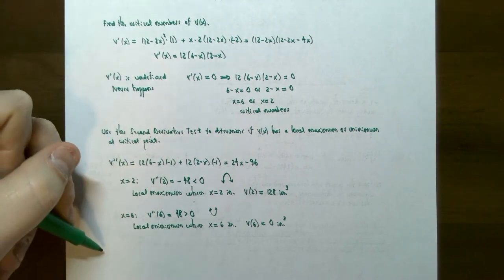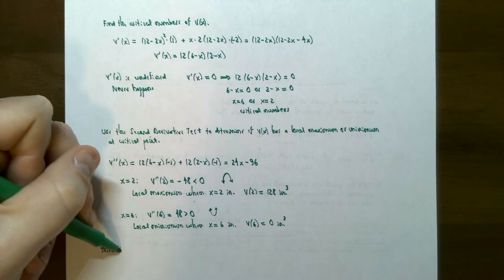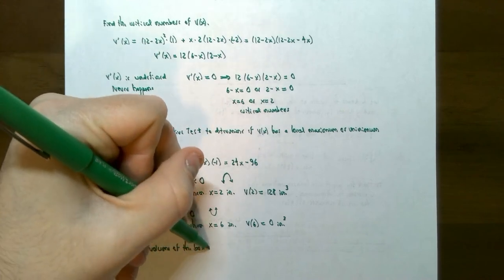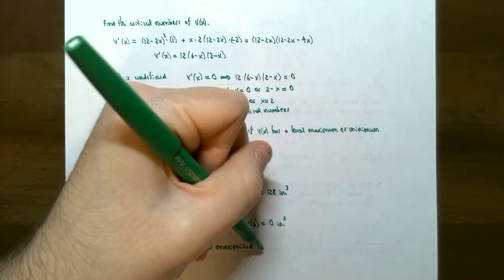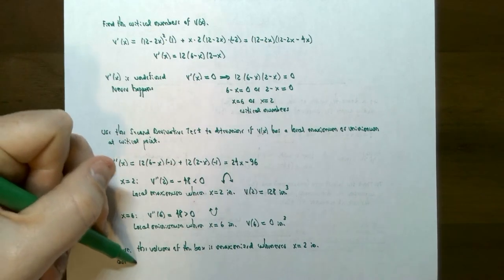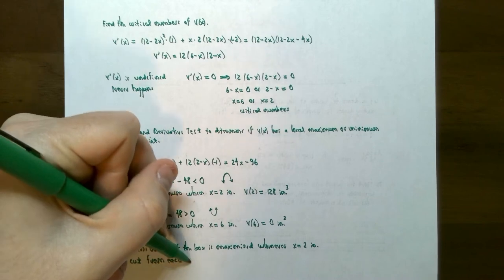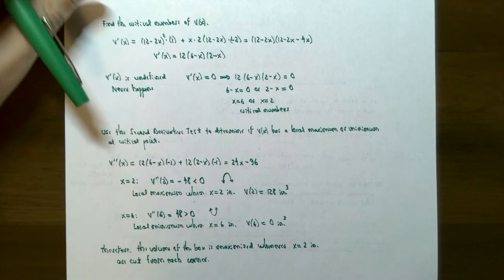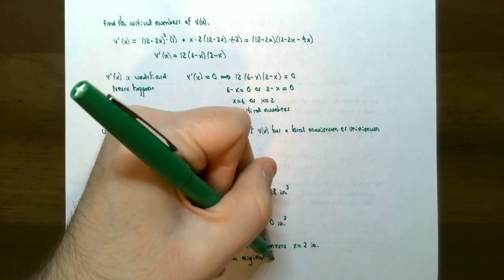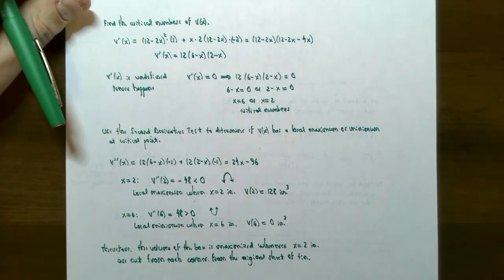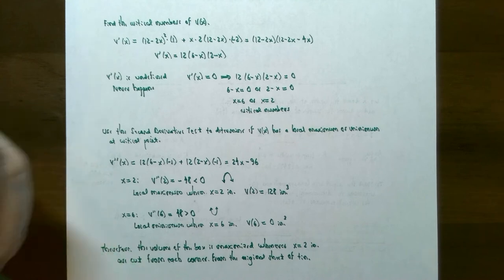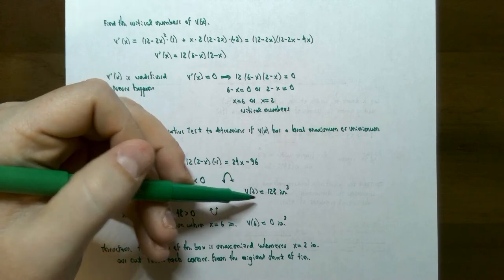So how does this answer the problem? The volume of the box is maximized whenever two inches are cut from each corner of the original sheet of tin. That's what was being asked — how much to cut from each corner so the box holds as much as possible. We also found the maximum volume is 128 cubic inches.